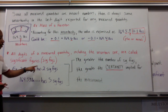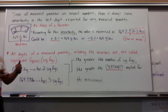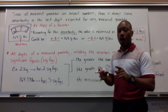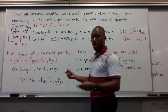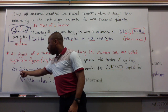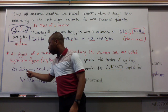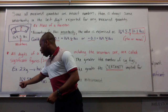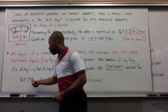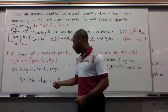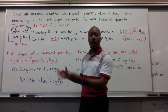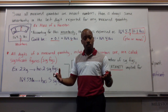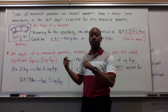We abbreviate significant figures as sig figs. All digits of a measured quantity, including the one that's uncertain — the one that you've guessed — are called significant figures. For example, if I have a measured quantity of 2.2 grams, this would have two significant figures. If I had 164.53 pounds, this would have five significant figures. Right now it looks like we're just counting the digits — for now we'll say that, but on the next board, we won't say that anymore.